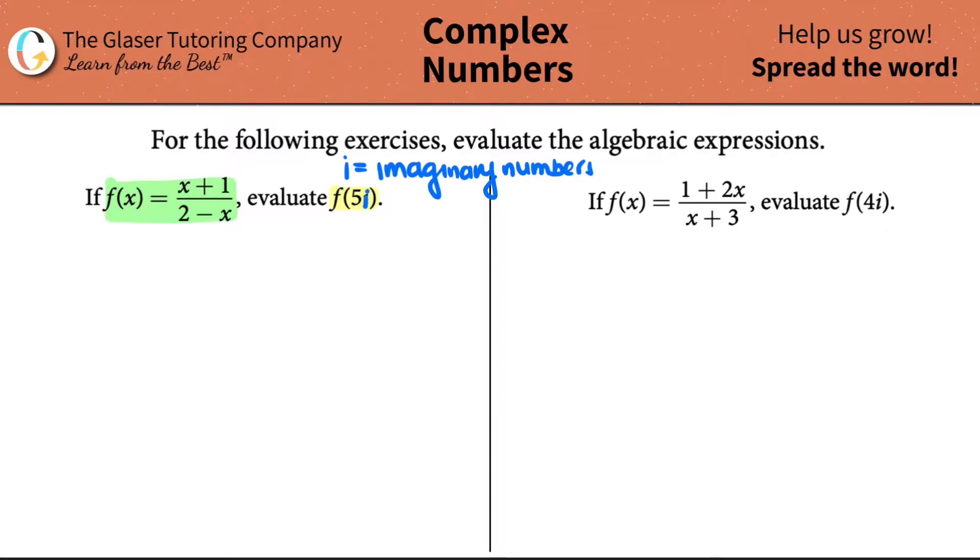So real numbers are actual numbers: 2, negative 2, 4, negative 4. i is denoted for numbers that basically don't exist, that are not real.